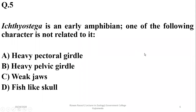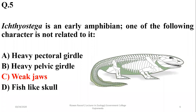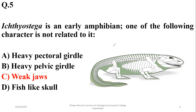Ichthyostega is an early amphibian — one of the following characters is not related to it. Ichthyostega are observed as the earliest amphibians and they have a heavy pectoral girdle and heavy pelvic girdle. Their skull is fish-like but their jaws are much stronger — they are not weak jaws — so C is the right option for Ichthyostega.